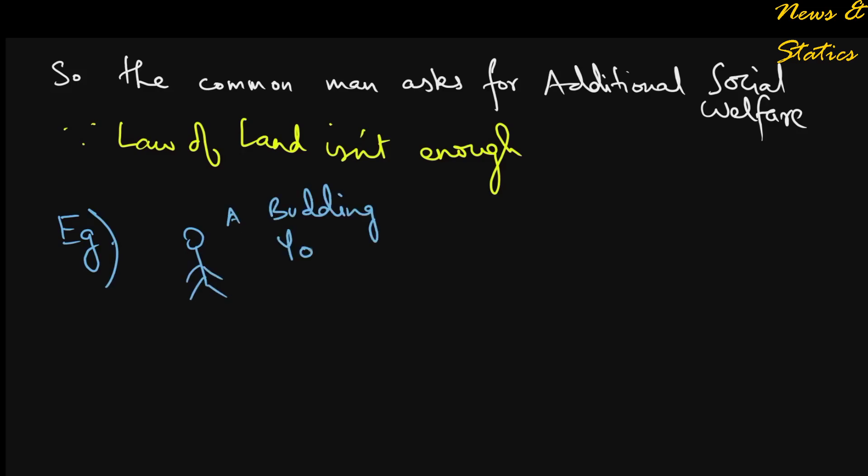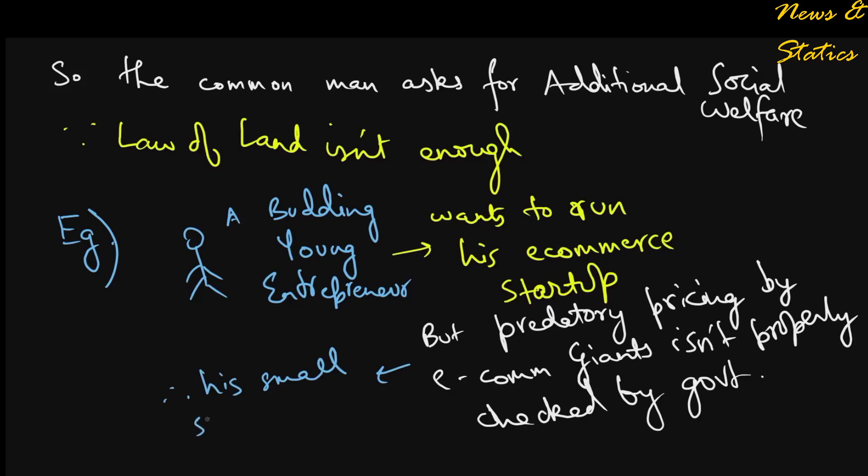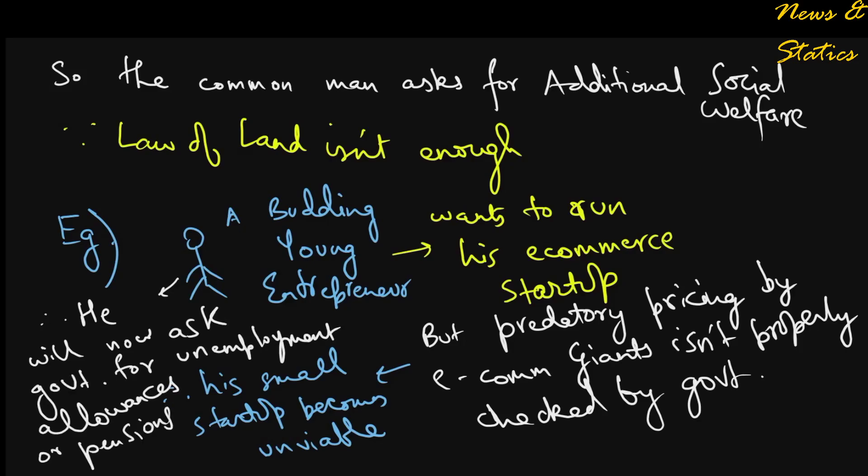Just imagine an entrepreneur in some country who had to close down his e-commerce startup because the predatory pricing by other e-commerce giants wasn't properly checked by his government, which made his business uncompetitive and unviable. Then of course he and many others like him would demand unemployment allowances or pension schemes from the state.